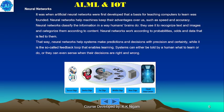It was when artificial neural networks were first developed that a basis for teaching computers to learn was founded. Neural networks help machines keep their advantages over us, such as speed and accuracy. Neural networks classify information the way the human brain does — they use it to recognize text and images and categorize them according to content. Neural networks work according to probabilities, odds, and data that are fed to them. That way, neural networks help systems make predictions and decisions with precision and certainty. It is the so-called feedback loop that enables learning — systems can either be told by a human what to learn or do, or they can sense when their decisions are right or wrong.